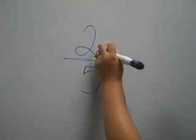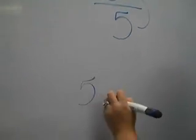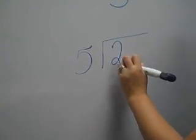So we start by dividing the bottom into the top. So that's 5 on the outside, 2 on the inside.